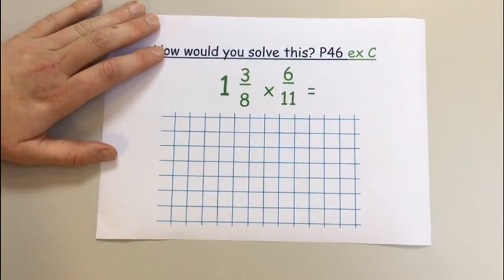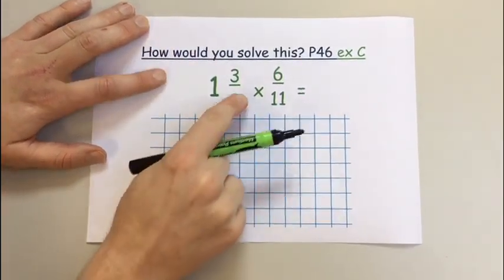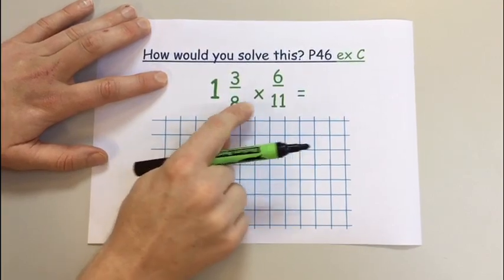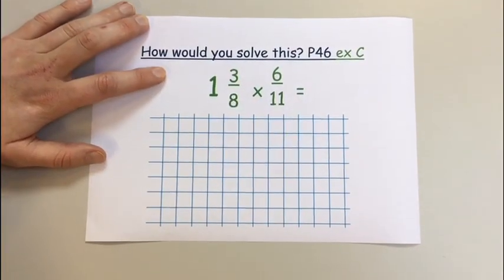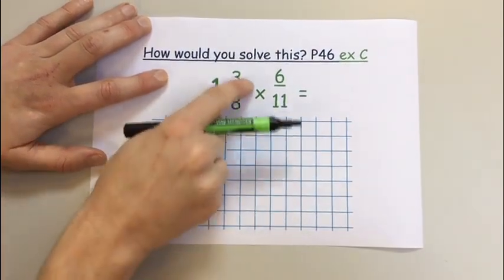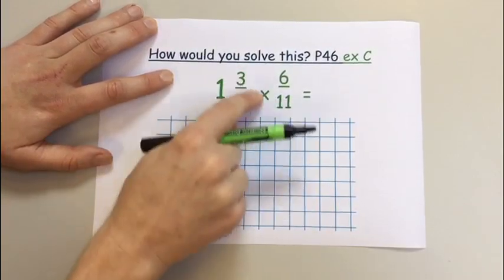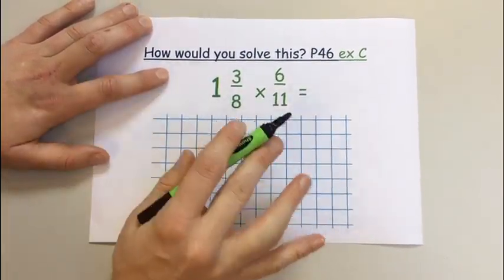Okay, so exercise C also extends to this skill of taking a mixed number fraction multiplied by a proper fraction. The simple task is we need to turn this mixed number fraction into an improper fraction first.